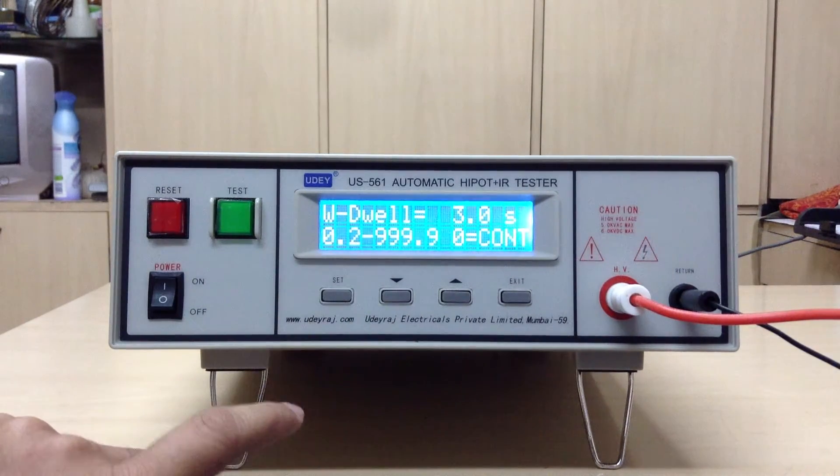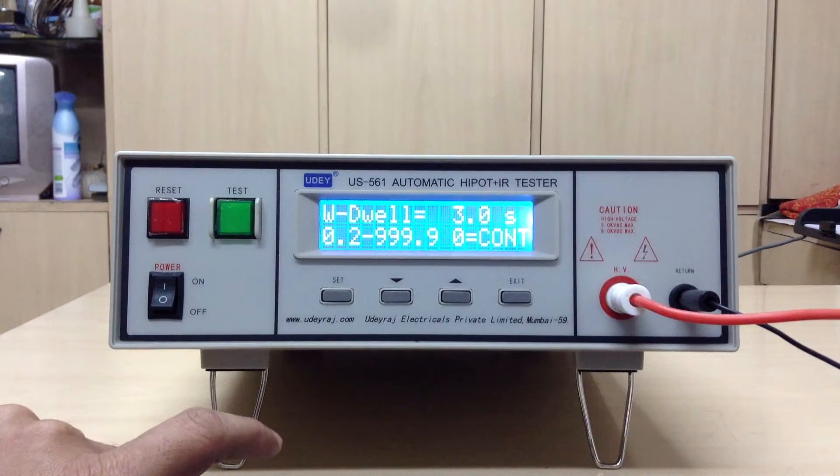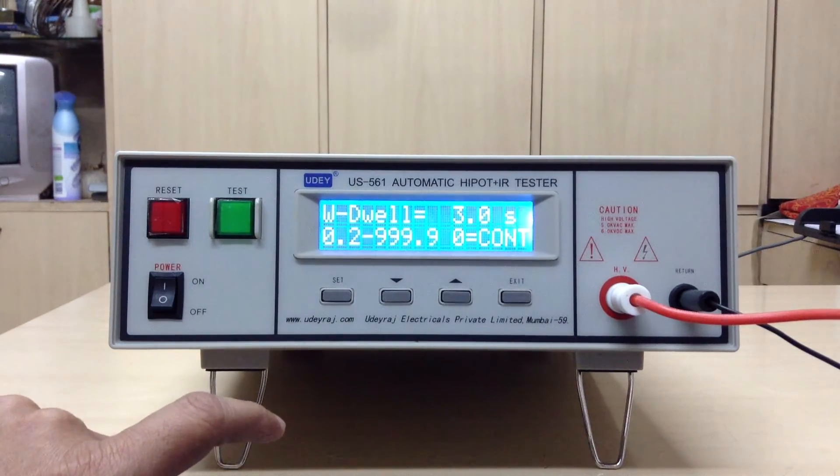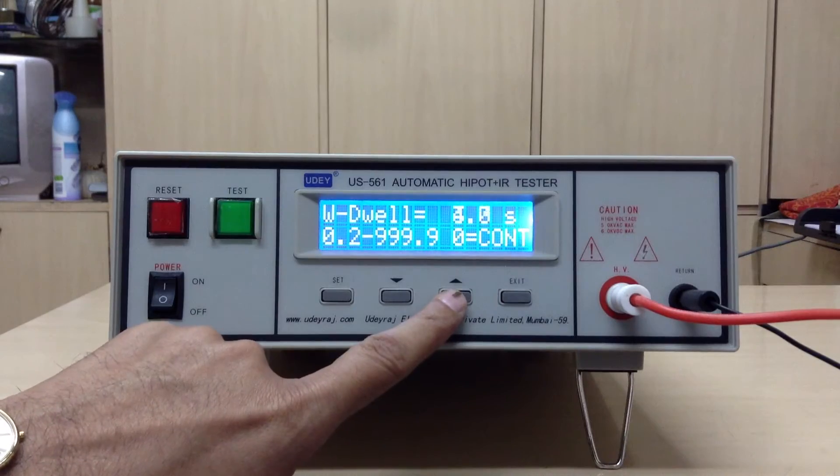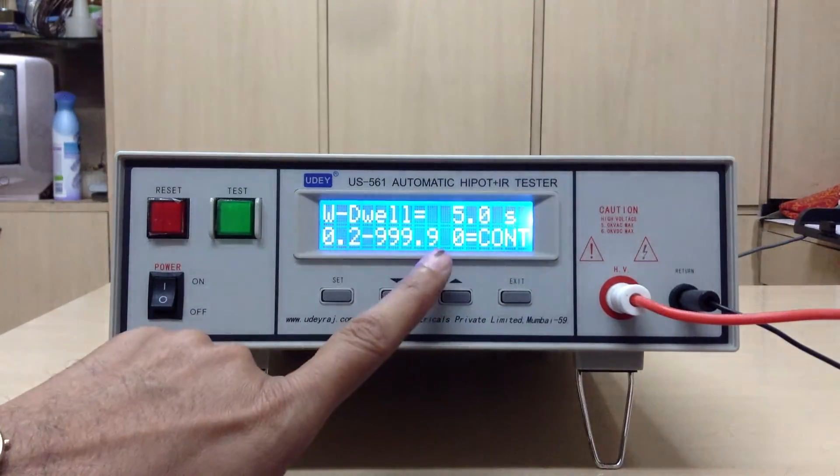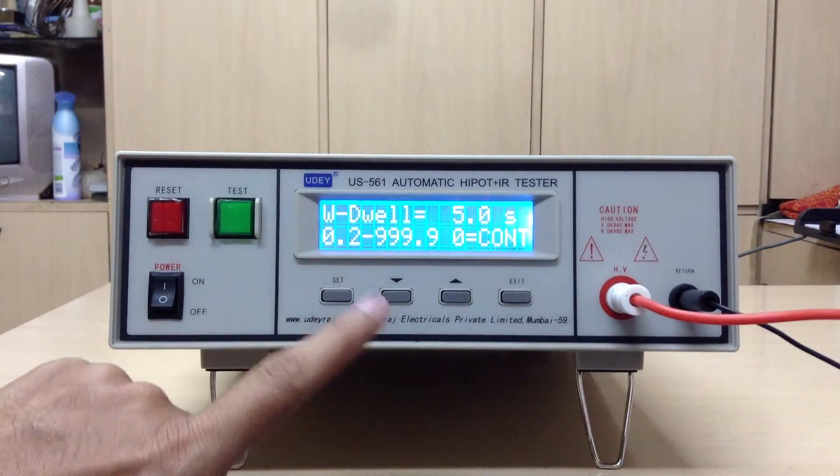Dwell time is for how much time you want the HV to be on. You can select the time, for example 3 seconds, 4 seconds—we select 5 seconds. And 0 stands for continuous, means it will be continuously on until you press the reset button.